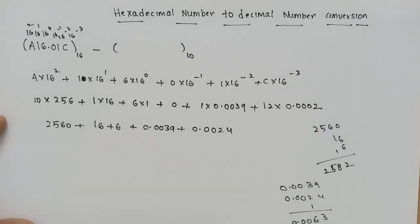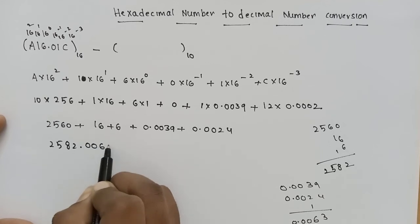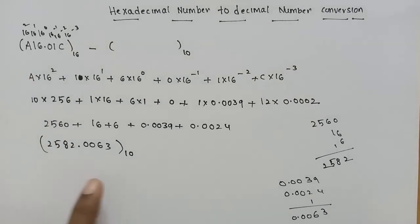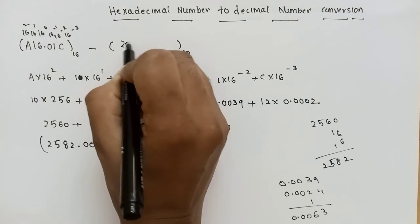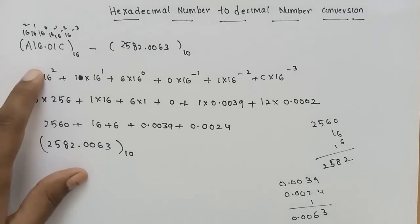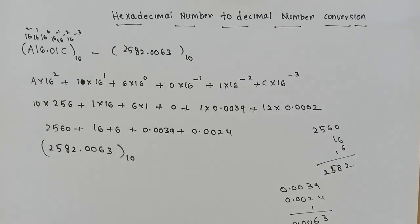Simplifying the result, I will add 2582 and 0.0063. You can calculate the hexadecimal number to get the decimal number. You can multiply the powers and simplify. If you like this video, subscribe to the channel. Thank you.